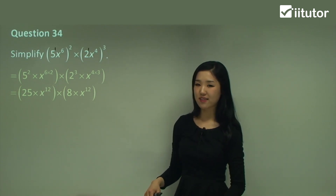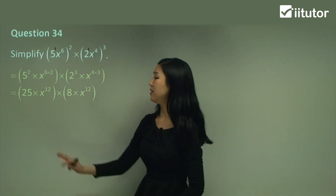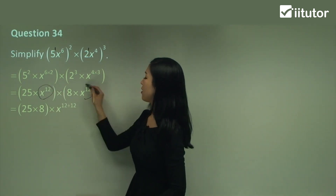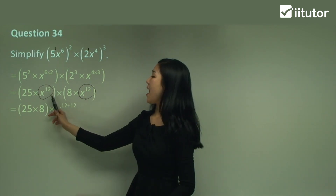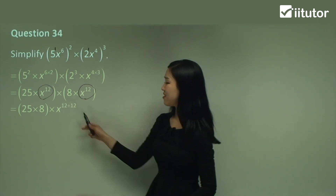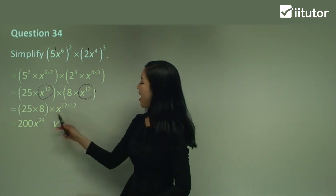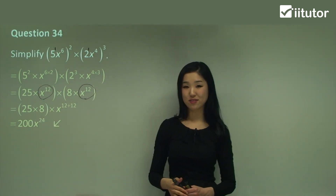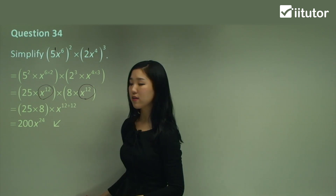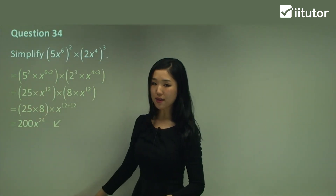Now we just need to gather the like terms. The numbers we're multiplying, so we put them out the front. 25 times 8 goes out the front. The x terms both have the same base, and we're multiplying, so we add the indices — 12 plus 12. That gives us 200x to the power of 24, since 25 times 8 is 200 and 12 plus 12 is 24. Adding extra steps is always a good idea to avoid silly mistakes.